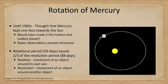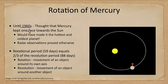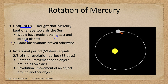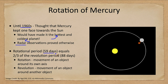Mercury rotates a little differently than other planets, although we'll see similarities when we get to some of the moons. Until the 1960s, it was thought that Mercury kept one face toward the Sun. This would have made it both the hottest and the coldest planet in the solar system — one side constantly baked by the Sun, the other never seeing sunlight and being incredibly cold. However, radar observations showed that this was different, and we found that the rotational period of 59 days was two-thirds of the revolution period of 88 days.